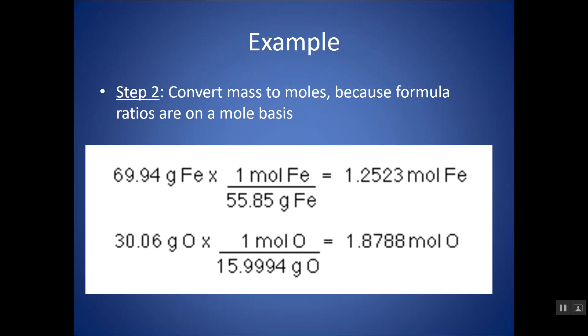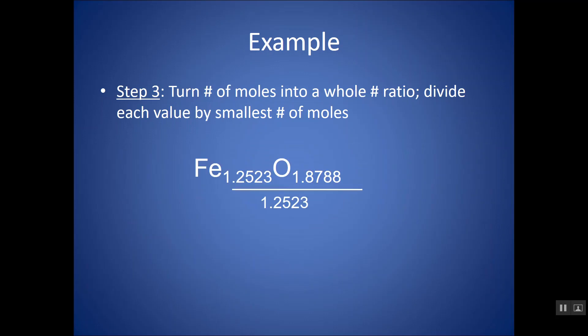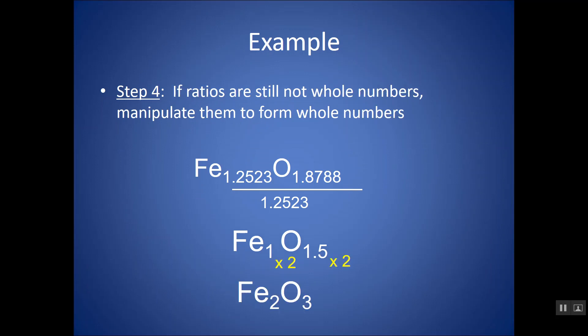Assume 100%. Take those grams. Change them into moles. Keep enough sig figs. Even if you keep more than you need to start with, that's cool. Rather keep more than less. Divide by the smallest. Oh, look, in this case, I get 1 and 1.5. What should I do? Let's multiply them by 2. And I get Fe2O3.